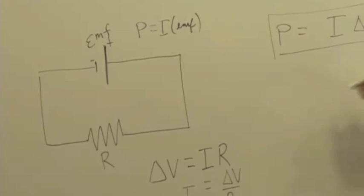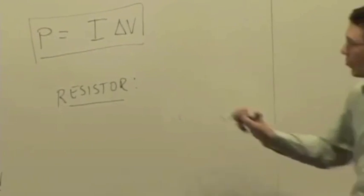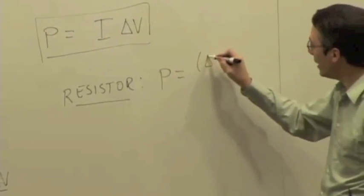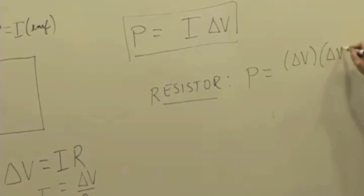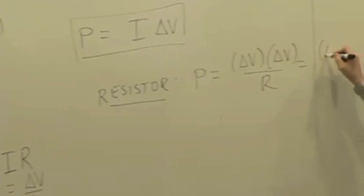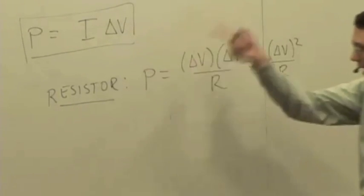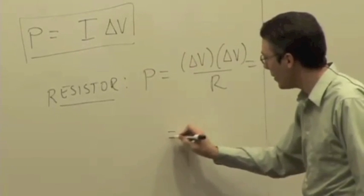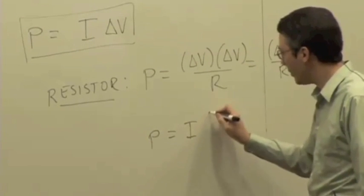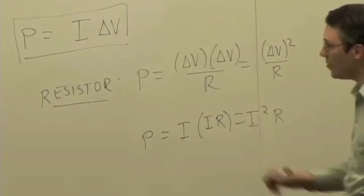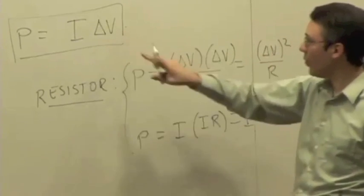Then for a resistor, we could also write this as, if we substitute in the current, we could say it's delta V times delta V over the resistance, or delta V squared over R. Or alternatively I could substitute in the potential difference if I knew the current and say that this is I times IR, or I squared times R. So these formulas are only for resistors. This one is true all the time.